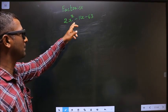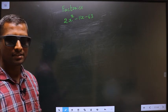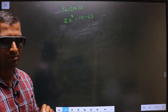Factorize 2x square minus 11x minus 63. To factorize any quadratic equation, step 1.